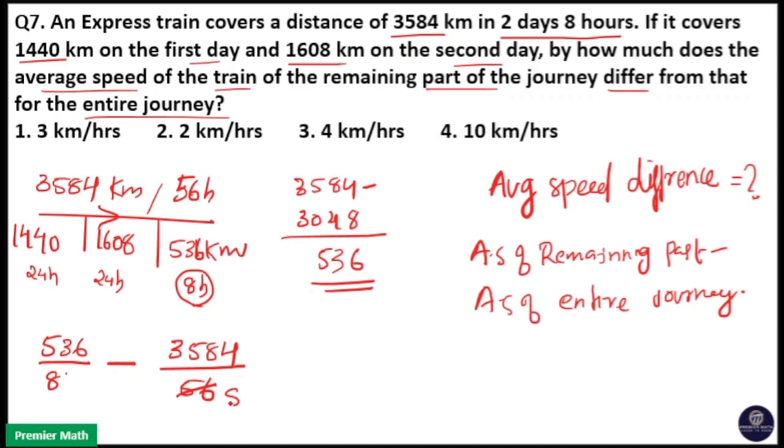Dividing 3584 by 56 gives 64. So for 536 by 8, we compute 536 minus 512 equals 24 divided by 8, which equals 3.